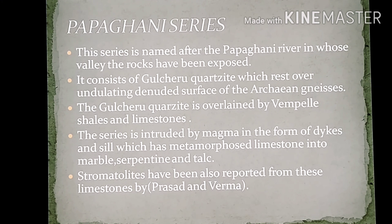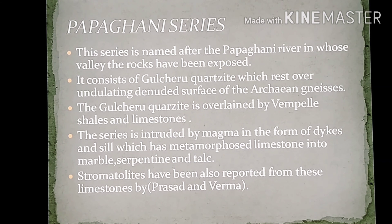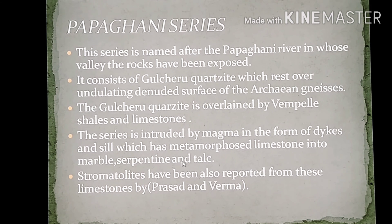The Papagani series is named after the Papagani river, in whose valley the rocks have been exposed. These geological names are generally in situ, originating from local features such as tribal names, health stations, or famous landmarks. It consists of Gulcheru Quartzite, which rests over the undulating denuded surface of Archean gneiss. The Gulcheru Quartzite is overlaid by Vempali shale and limestones. The series is intruded by magmas in the form of dykes and sills, which have metamorphosed limestone into marble, serpentine, and talc. Stromatolites — algal fragments and biogenic fossils — have been reported from these limestones by Prasad and Verma.